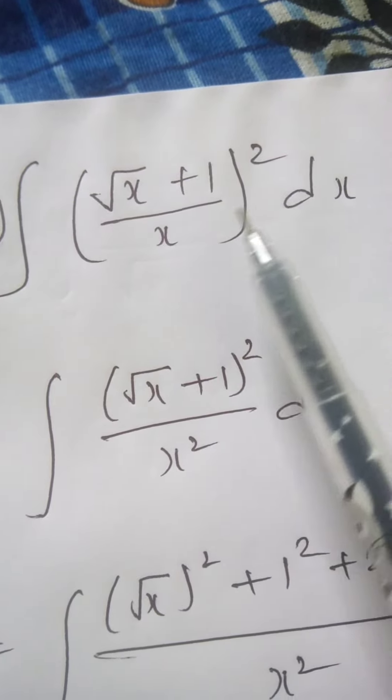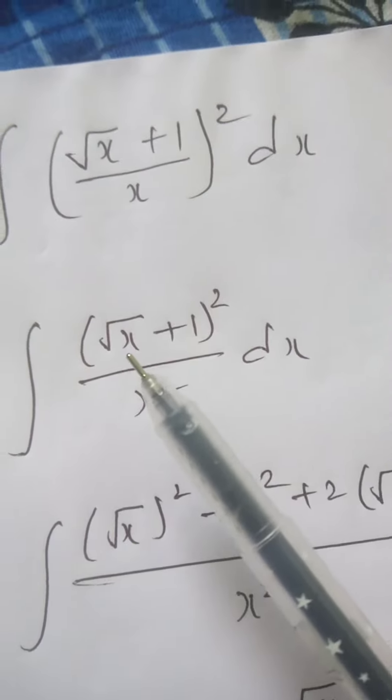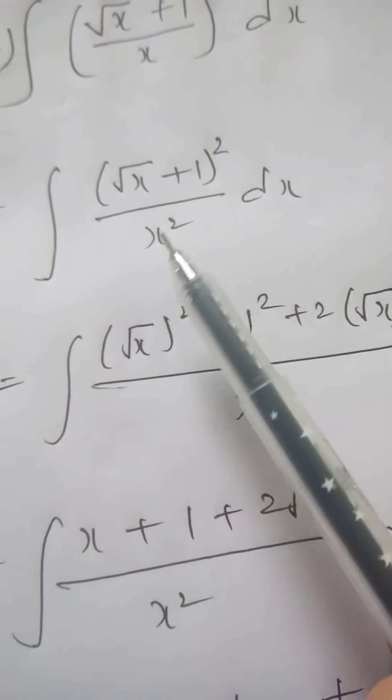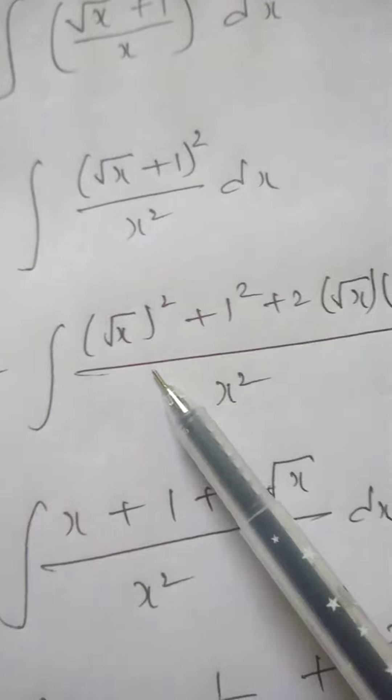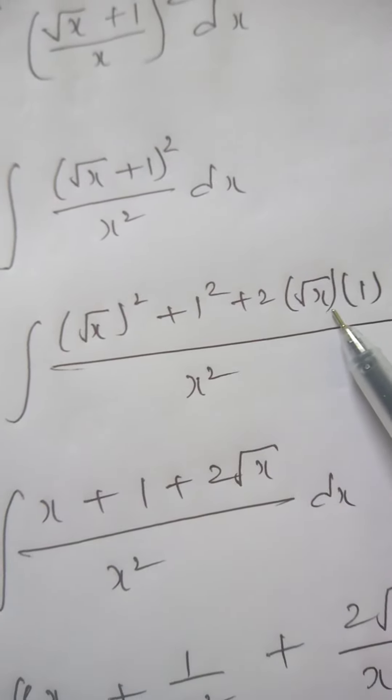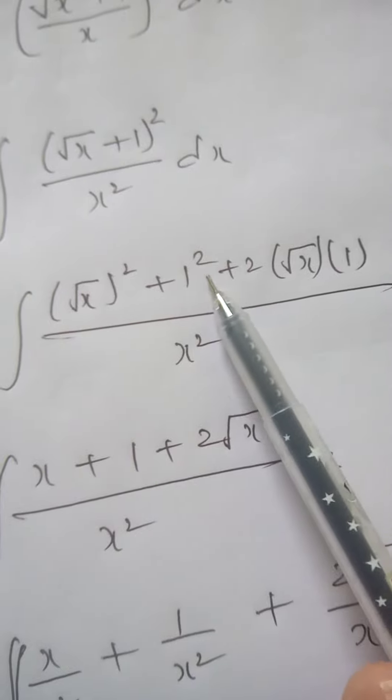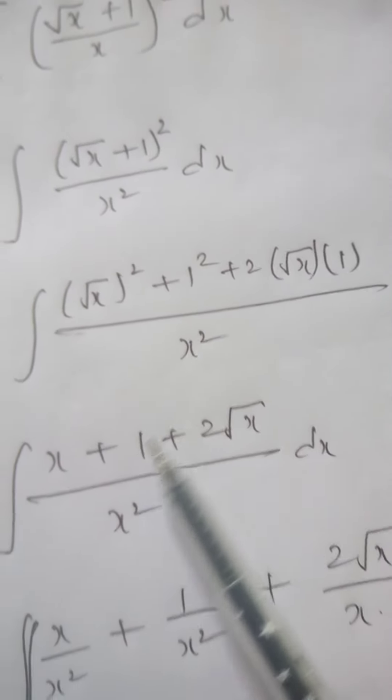Integral of root x plus 1 whole square by x. So I can write this as root x plus 1 whole square by x square. It is of the form a plus b whole square. So a square plus b square plus 2ab by x square. If you square it, root will get cancelled.